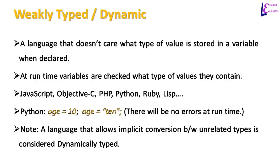That literally means while performing operations between values of two different types, the result will be a value of the higher type. That is, an operation on a variable of type double and type integer will result in a value of type double, because double has higher capacity than the integer data type.